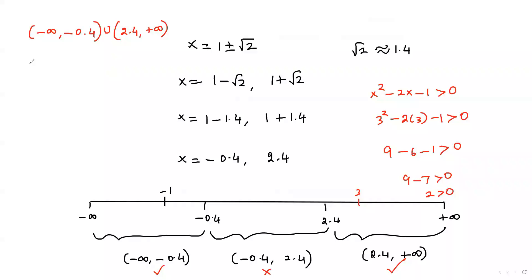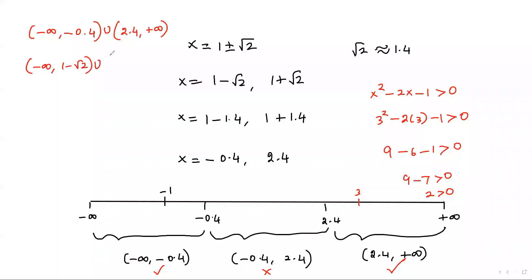So the solution for the given inequality is (-∞, -0.4) ∪ (2.4, +∞). We can also write this exactly as (-∞, 1 - √2) ∪ (1 + √2, +∞).